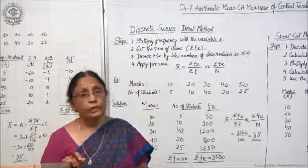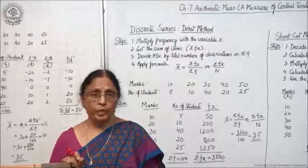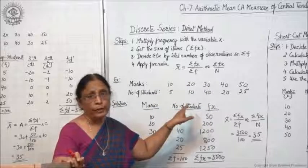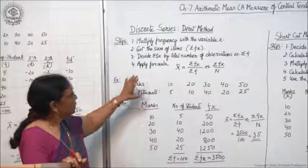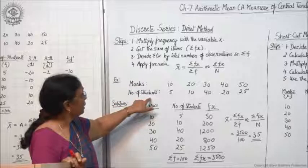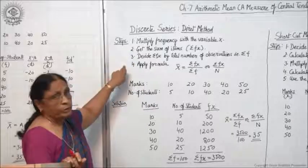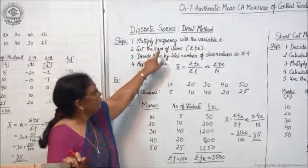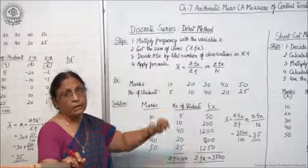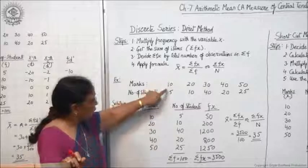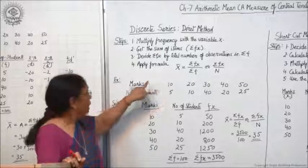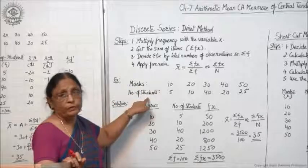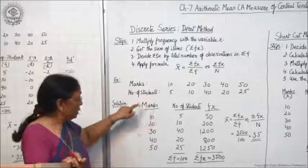You are supposed to calculate the average marks, or what is the arithmetic mean of this data. Now in the case of discrete series where the frequency is given, the steps you are supposed to follow are these. First, multiply frequency with the variable x — that means each frequency you will multiply with the variable. Marks will be considered as x and number of students will be taken as frequency.